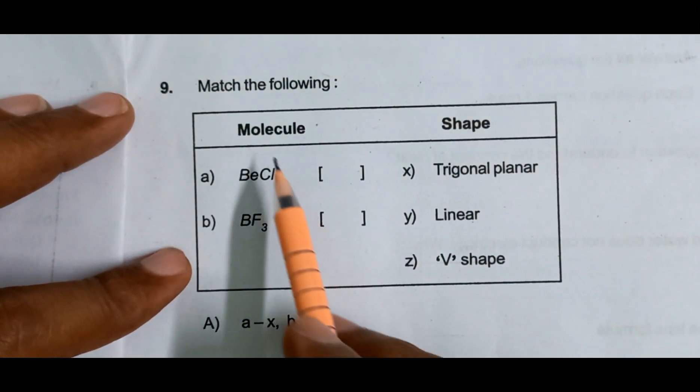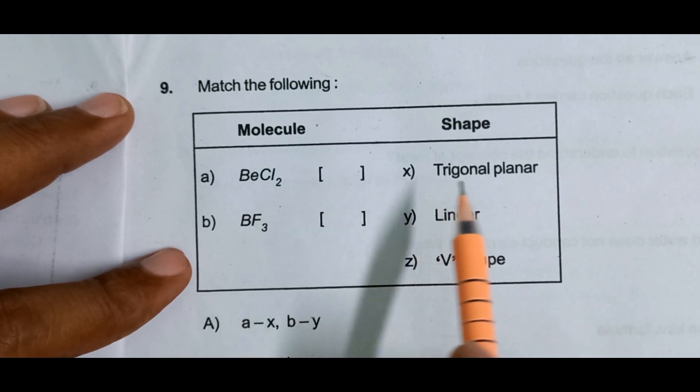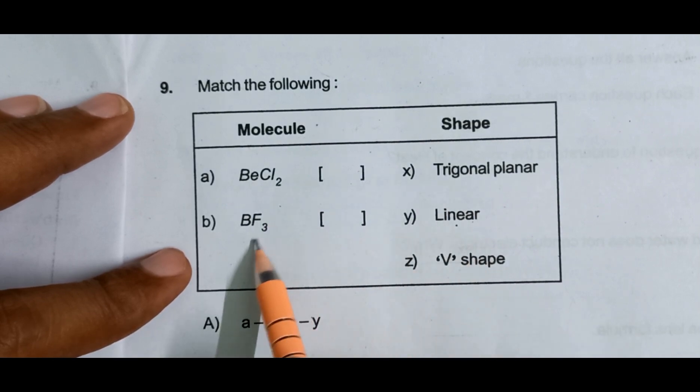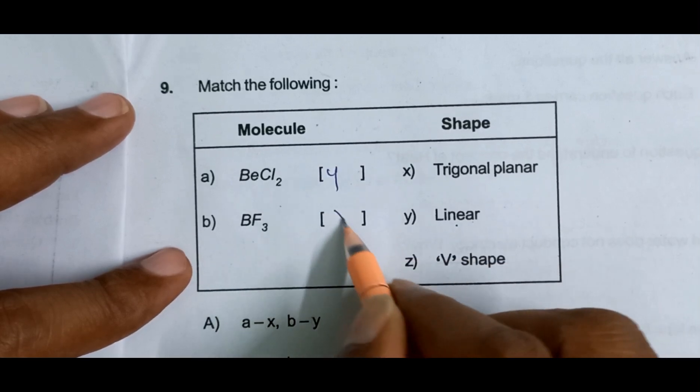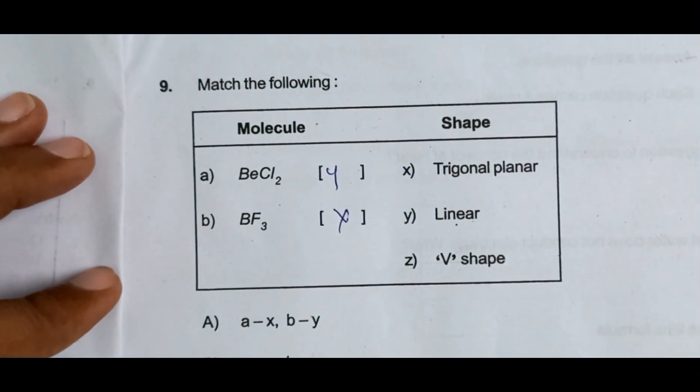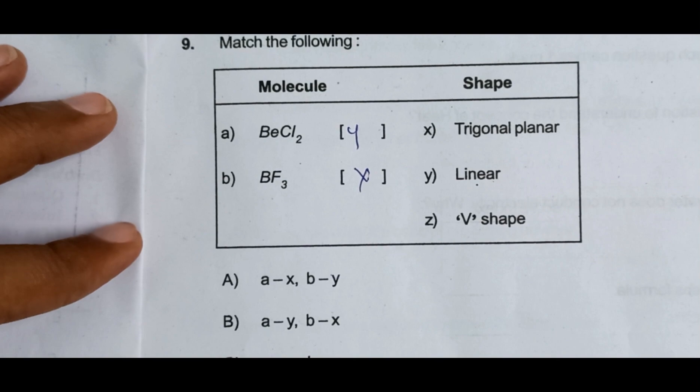Next, match the following: BCl2 linear shape, boron trifluoride trigonal planar. It is Y, it is X. A is Y, B is X.